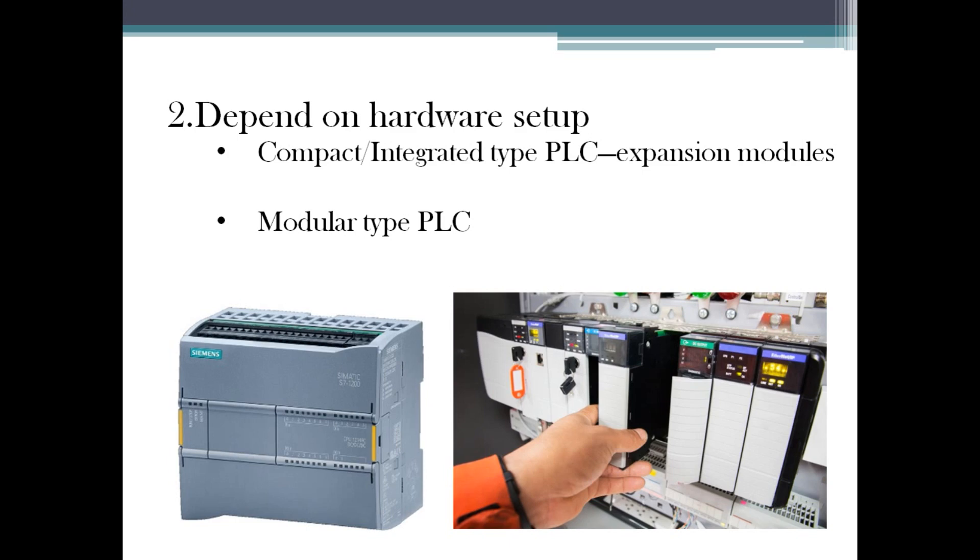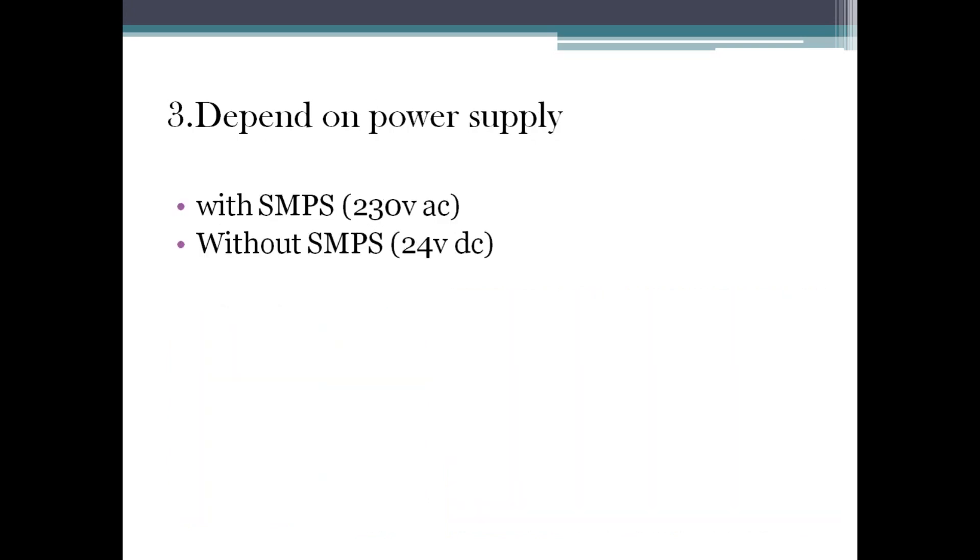The third classification type depends on power supply. This is also an important category because whenever we are talking about what power supply we need to give to PLC, that is one important thing we should know. The power supply can be both - it may be 230V or it may be 24V. It depends upon the types of PLC.